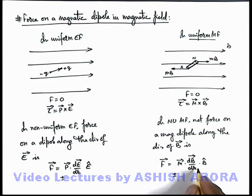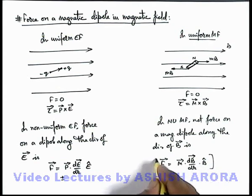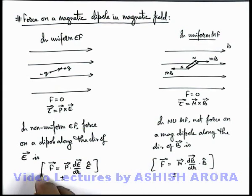whether dB by dr is positive or negative, or whether B is increasing or decreasing. Based on that we can get - so the relations are exactly similar with the analogy we can write which we have used in electrostatics. Now we are using it for magnetic dipole placed in a uniform or non-uniform magnetic induction.